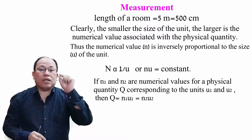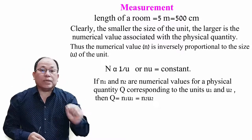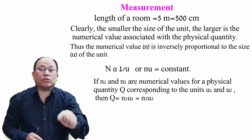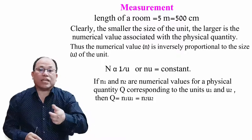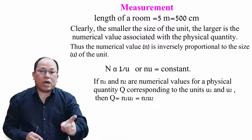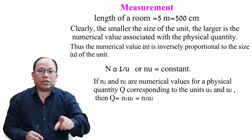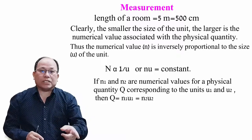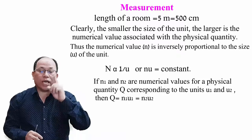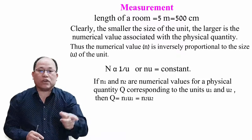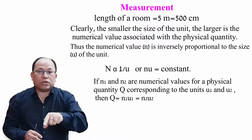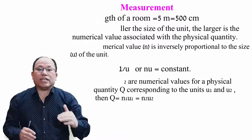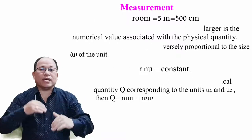For example, 1 meter equals 100 centimeters. Here N1 is 1 and U1 is meter, while N2 is 100 and U2 is centimeter. This illustrates the inverse relationship between unit size and numerical value.